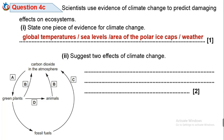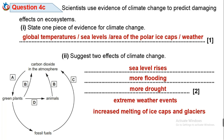Question 4C2: Suggest two effects of climate change. Effects associated with increased rainfall include increased sea levels and more flooding. Effects associated with decreased rainfall include droughts, extreme hot weather events, and increased melting of ice and glaciers. Any two of these effects are acceptable.